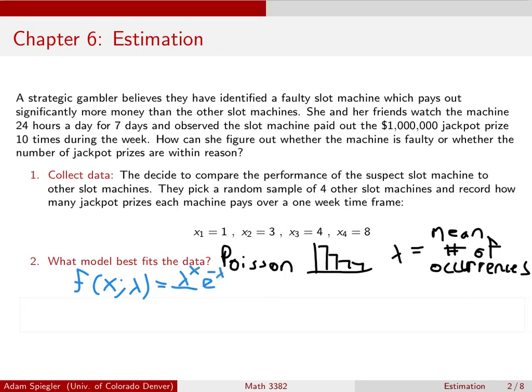And that PDF for a Poisson distribution would look like the PDF here is lambda to the X times E to the minus lambda, all divided by X factorial. So that's the PDF for a Poisson distribution, where lambda, again, is the only parameter in this model. And lambda is representing, in this case, on average, how many times does a slot machine pay out the jackpot in the course of a week. And we don't know what lambda is.